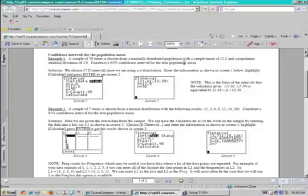Because it's telling us it's normally distributed, notice it has a sample mean of 12.5, population standard deviation is given, so when that happens, we're going to use the Z interval.